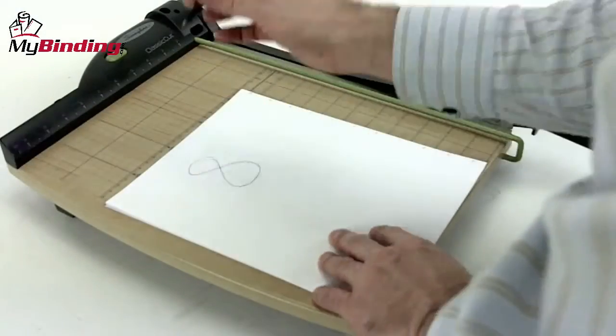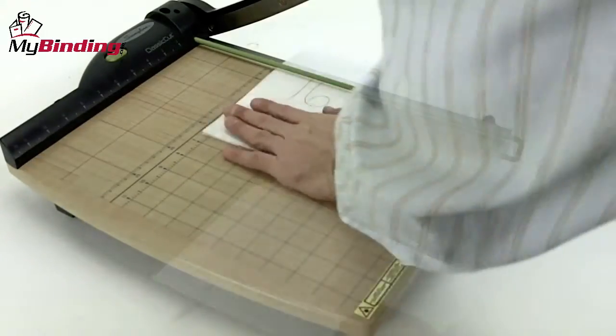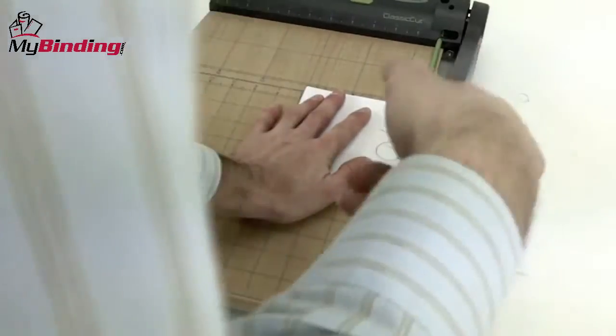The ClassicCut line of trimmers can cut up to 15 sheets of 20 pound paper per trim. That was eight sheets, no problem, and here's 16, no problem.